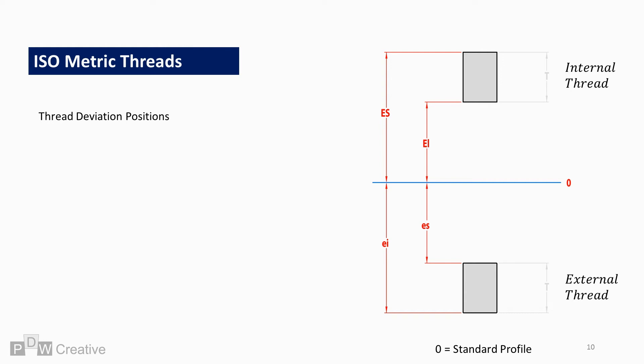The image on screen now shows how thread deviation works. Let's consider the blue line or zero line as the basic thread profile. Both internal and external threads may deviate, but this deviation must be in opposite directions away from the basic profile zero line. In regards to the internal thread, deviation is above the zero line, and so is considered positive.